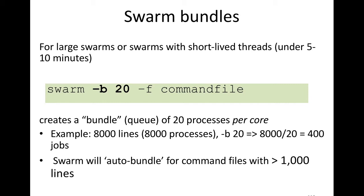So for example, suppose you have 8,000 lines in your swarm command file. If you use the -b 20 flag, you'd get 8,000 divided by 20, which is 400 subjobs in your swarm. If you did not use the -b 20, you'd get a single swarm with 8,000 subjobs.